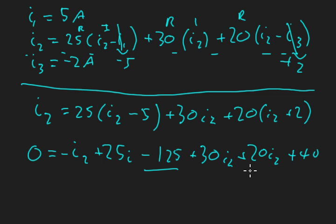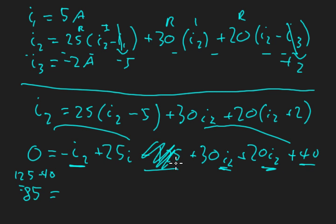Now I'm going to move these constant terms over to the other side and that'll give me 125 minus 40 which is equal to 85. And then I'm going to factorize all of these I2 terms on the right hand side. So I've already taken care of those constants there on the other side and they equal 85. So I2, if I take I2 out of this I get negative 1.